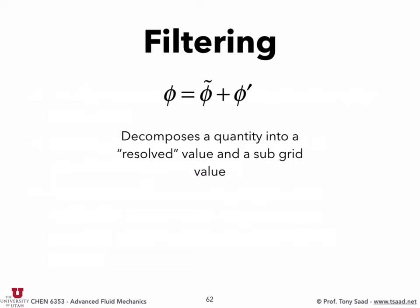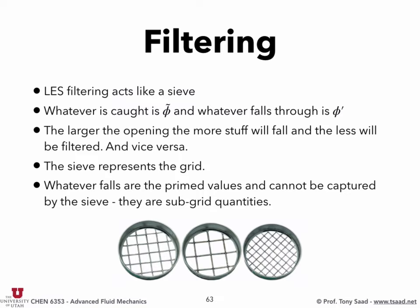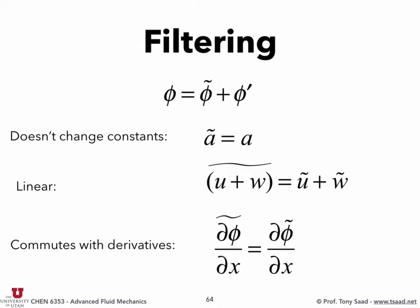The idea of filtering looks like averaging: you decompose a turbulent quantity into a filtered quantity plus a fluctuating part. The word 'fluctuating' is not really correct — phi-prime in this case is really a subgrid quantity, the quantity that passed through the filter that the grid could not capture. Think of the sieve: any rocks larger than the sieve width are captured, and anything smaller goes through.